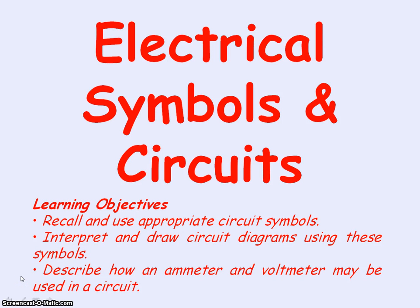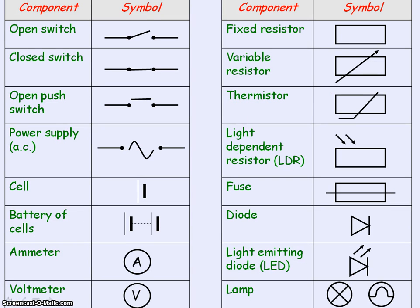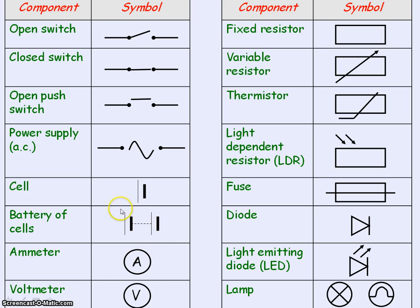We're going to be looking at electrical symbols and circuits. These are the electrical symbols that you need to know. First are the switches, and then the next three are looking at what provides the electrical energy: an alternating power supply, a cell which is a direct current supply, and a battery of cells which is also a direct current supply. We then have an ammeter, which is used to determine the current through a component.